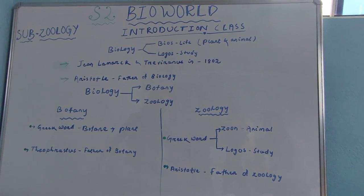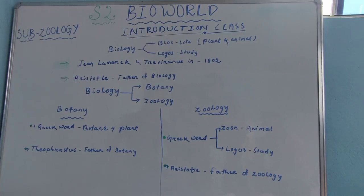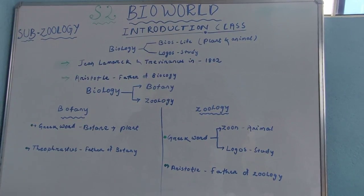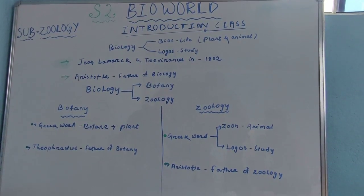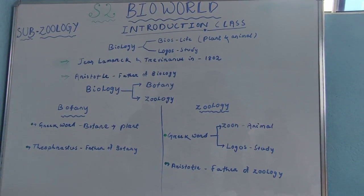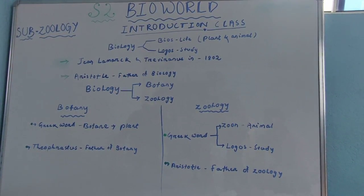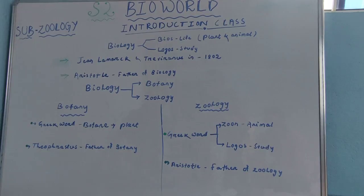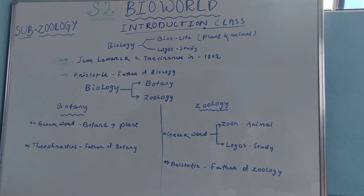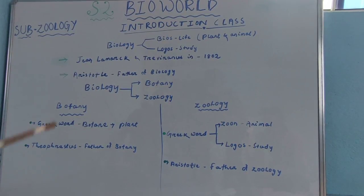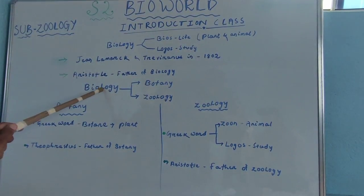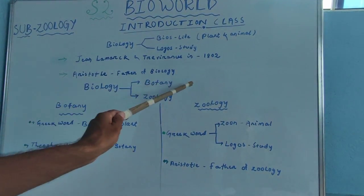Lamarck and Treviranus in 1802 first coined the term biology. Aristotle was known as the father of biology. Biology consists of mainly two branches.